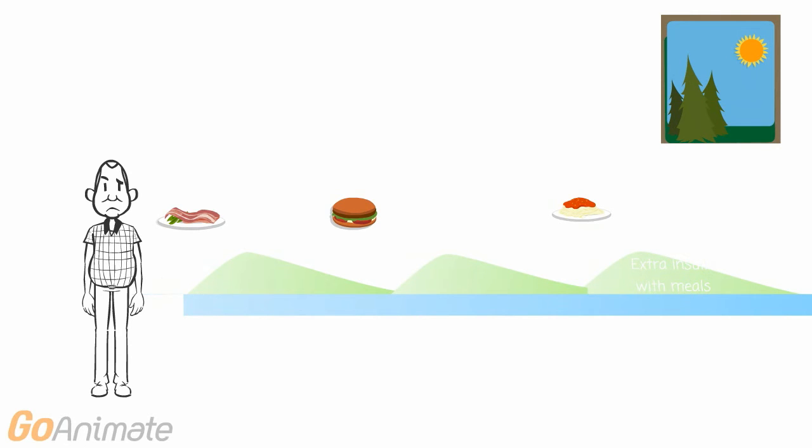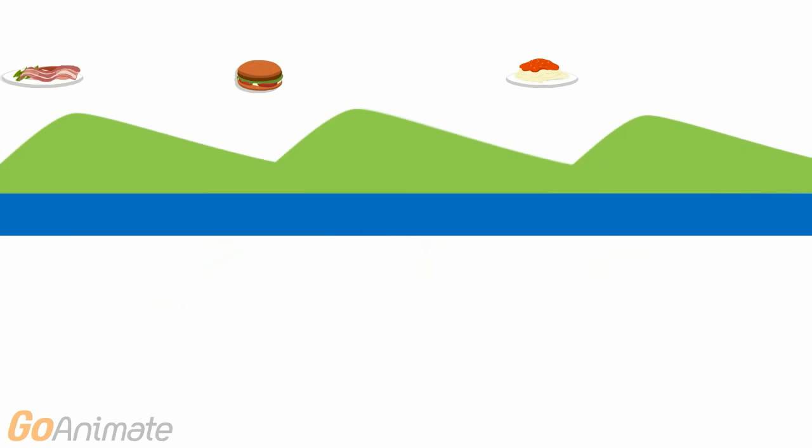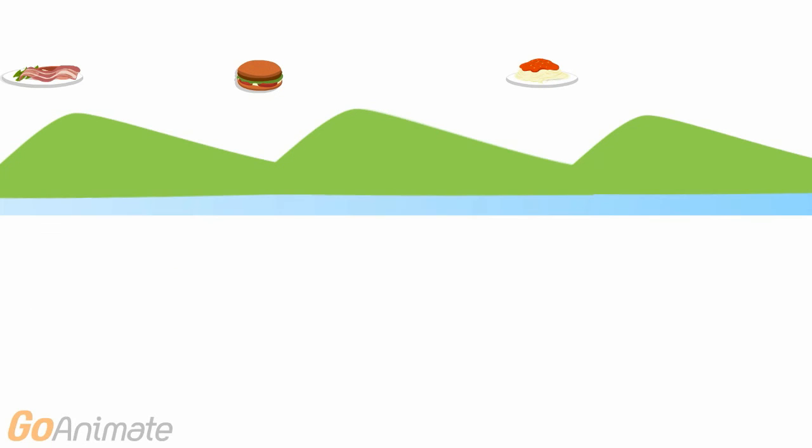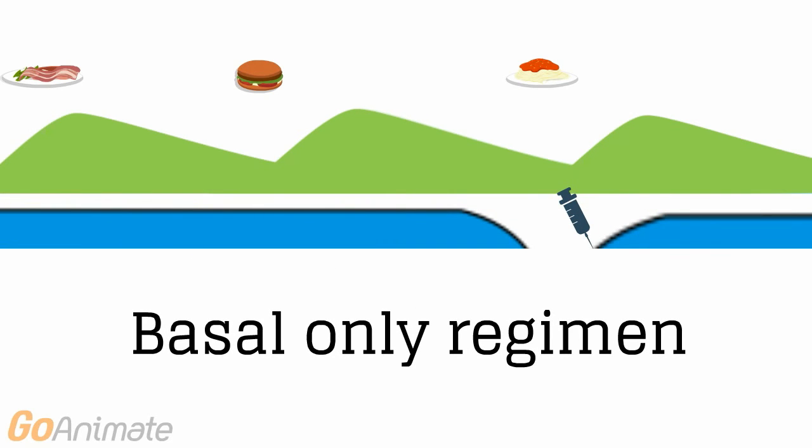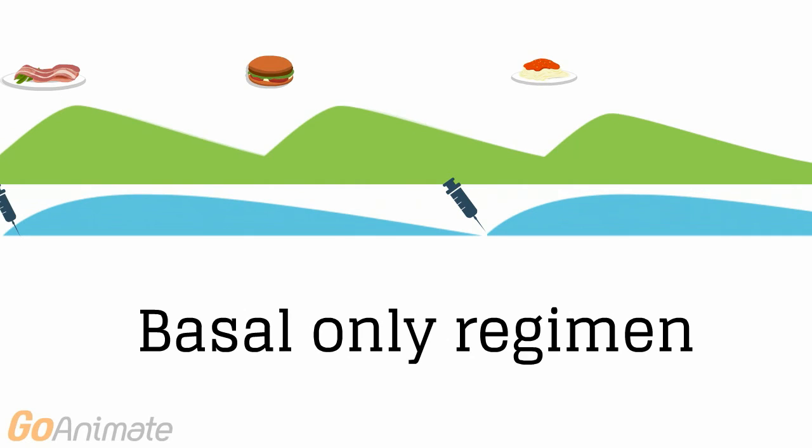Hence, the choice of the insulin regimen depends on the patient's needs. So for instance, during the initial stages of insulin therapy, patients with type 2 diabetes could be just on basal only regimen, with one or two basal insulin injections a day.